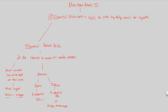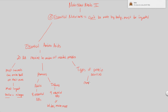The one that infants cannot make on their own is histidine, but we don't need to know the details of that distinction. Just know that as humans, we change our ability in terms of what we can and cannot make. So adults need eight essential amino acids, and for infants it's nine. Now let's take a look at protein sources — where do we get these amino acids from?